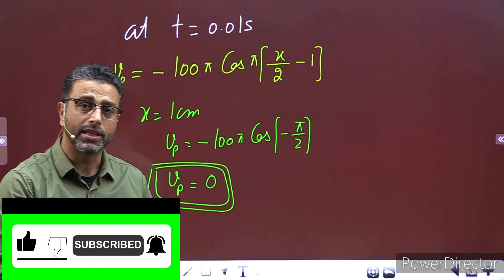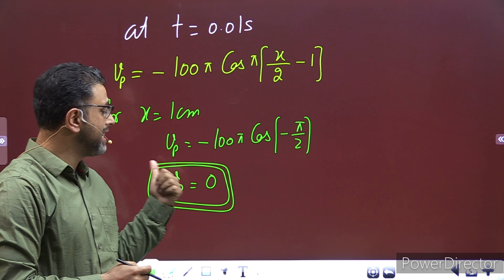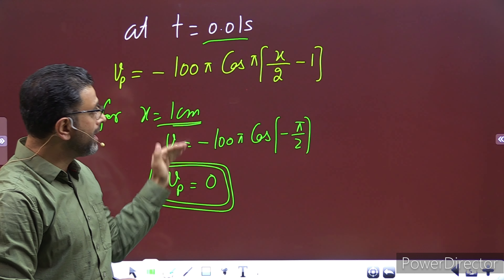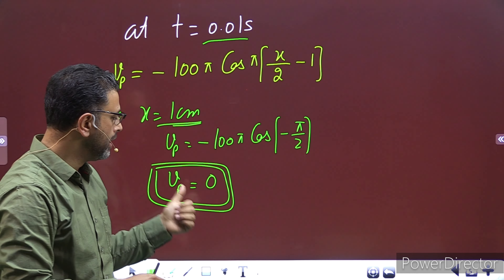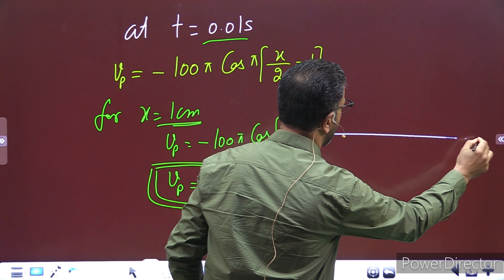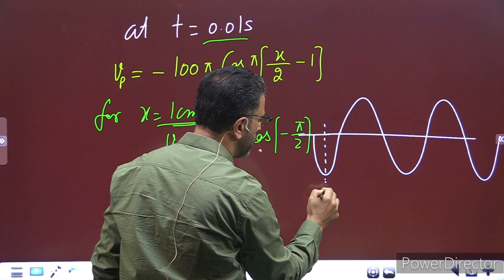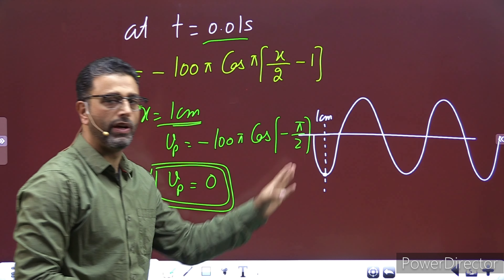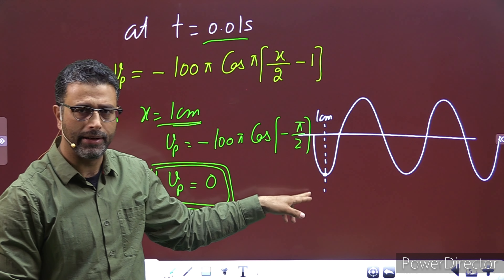This is important। Particle velocity 0 के बराबर है, that means यह वाला particle — जो x = 1 cm पे है at t = 0.01 seconds — यह अपने extreme position पे है: top of the crest या bottom of the trough। Wave अगर कुछ ऐसे है, let's suppose x = 1 cm वाला particle top पे है। Wavelength जो आपने निकाली है that is 4 centimeters।